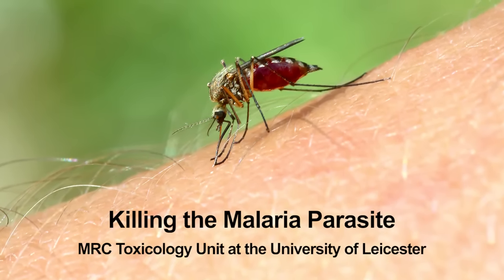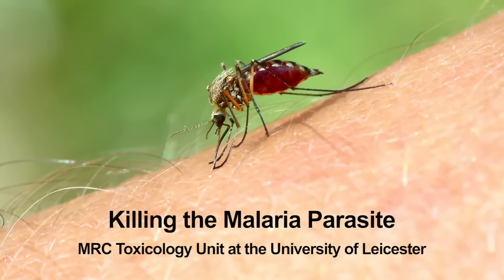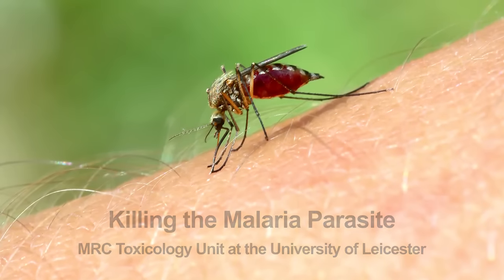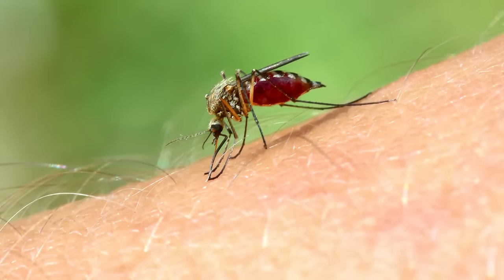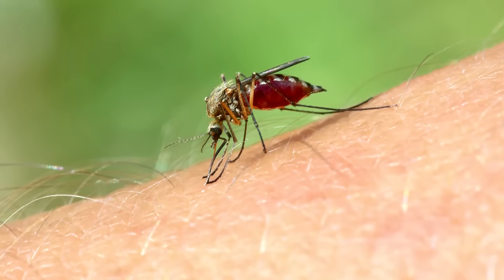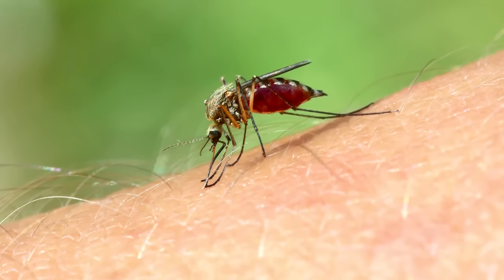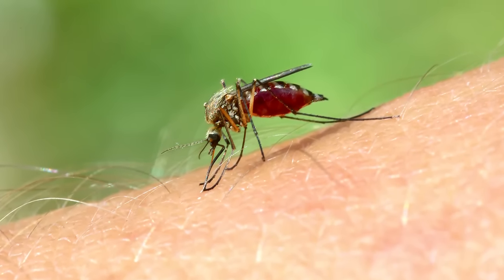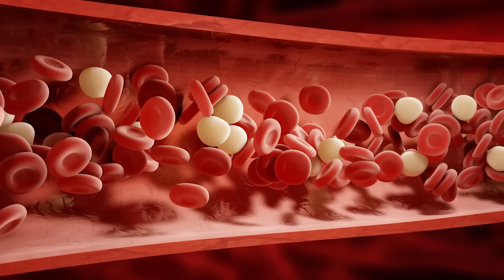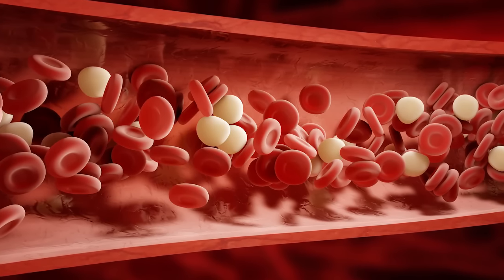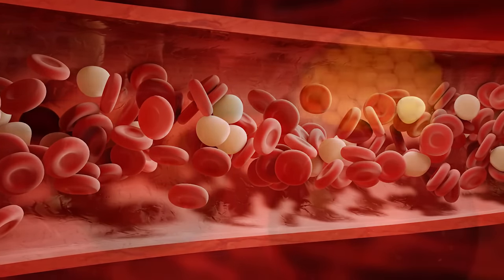Malaria is caught from the bite of a mosquito, which injects the parasite into our bloodstream. The parasite then finds its way first into our liver, where it just sort of grows with no adverse effect on the person. But then it bursts out of the liver — thousands, millions of these parasites — into our bloodstream, where the parasite invades red blood cells, the cells that carry oxygen around our blood.